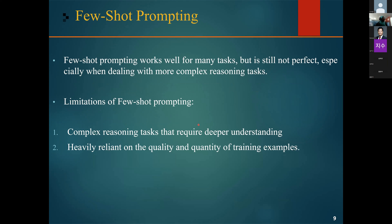Few-shot prompting is very successful in improving performance on a range of tasks, but it still has limitations. One challenge is that it may not work well for more complex reasoning tasks that require a deeper understanding of underlying concepts. In this case, the prompts may not provide enough information for the model to make accurate predictions, and additional fine-tuning is required.